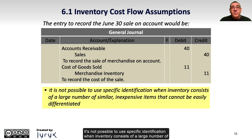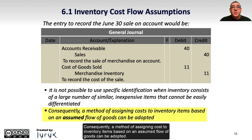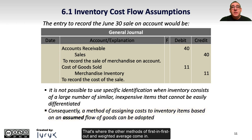It's not possible to use specific identification when inventory consists of a large number of similar, inexpensive items that can't be easily differentiated. Consequently, a method of assigning cost to inventory items based on an assumed flow of goods can be adopted. That's where the other methods of first-in first-out and weighted average come in.